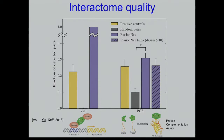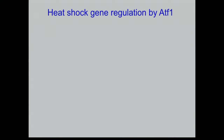When we tested our fission yeast network with this completely independent method, we show our interactions and the positive controls are the same quality. Also, contrary to what biologists often say, hubs in the network are not noisier — we find the same quality for hubs. This systematically shows we have a good quality network.